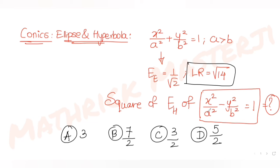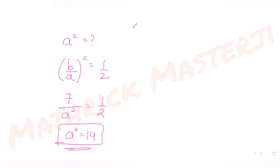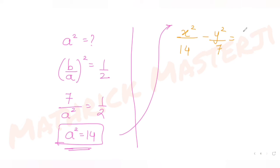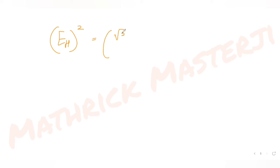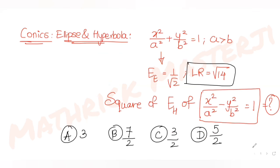The equation of the hyperbola using these values is x²/14 - y²/7 = 1. The eccentricity of a hyperbola is √(1 + b²/a²) = √(1 + 7/14) = √(1 + 1/2) = √(3/2). The question asks for the square of the eccentricity, so squaring gives 3/2. The correct answer is option C.